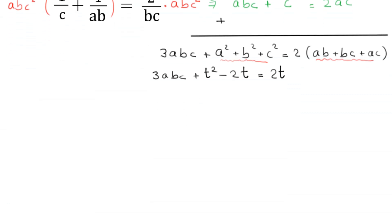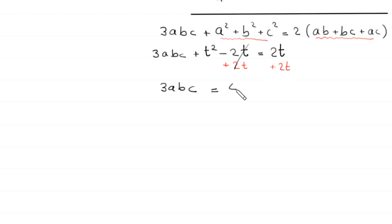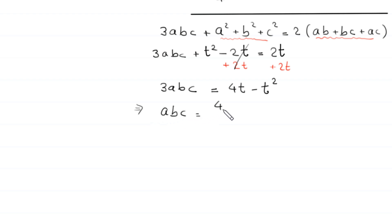We add 2t to both sides so the −2t cancels, leaving 3abc equals t² − 2t + 2t... Moving t² to the right-hand side gives 3abc equals 4t − t². Dividing both sides by 3: abc equals (4t − t²)/3. Let's call this equation 5.